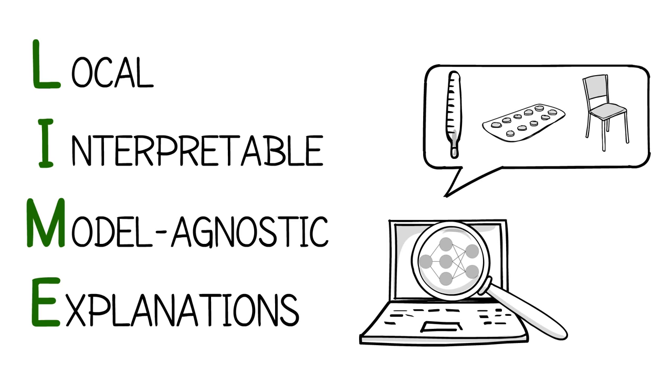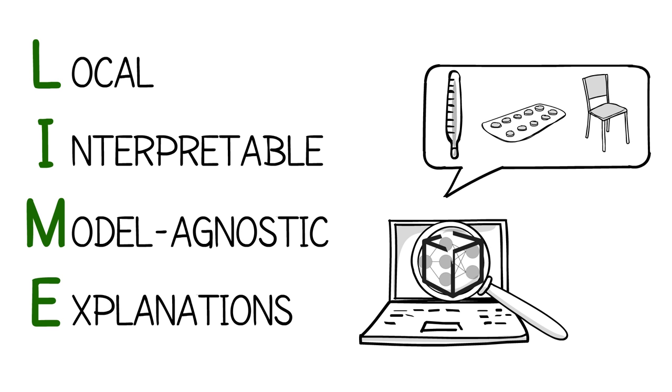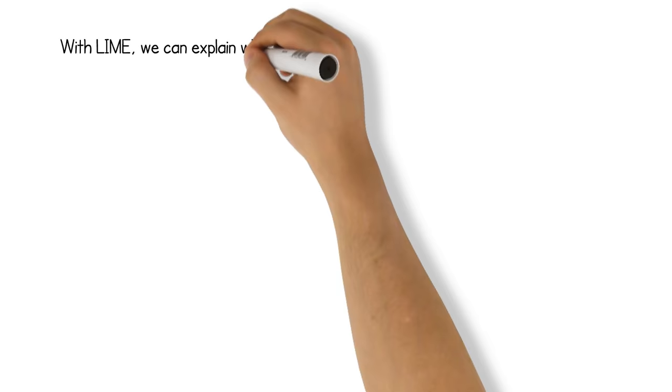Let's look at this acronym from the bottom up. We know what explanations are. By model-agnostic, we mean that LIME treats the model as a black box, so that it works for any model. Interpretable means that the explanation produced by LIME is simple enough for a human to understand. Finally, local refers to how we get these explanations. LIME approximates the black box model locally, in the neighborhood of the prediction being explained.